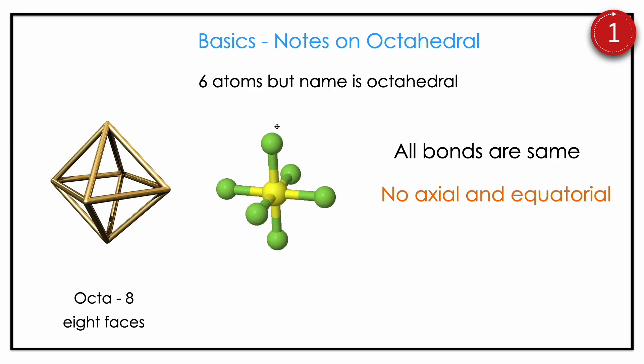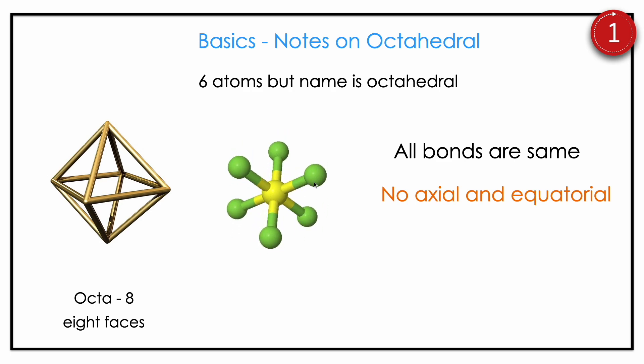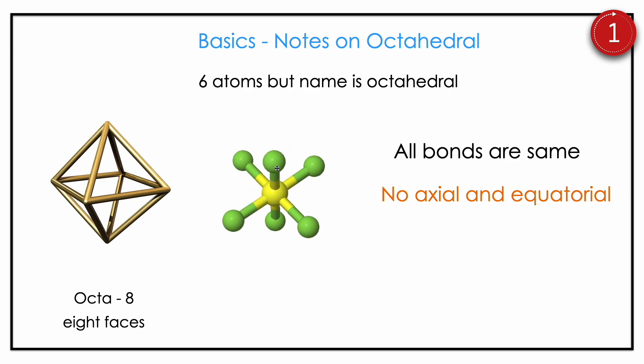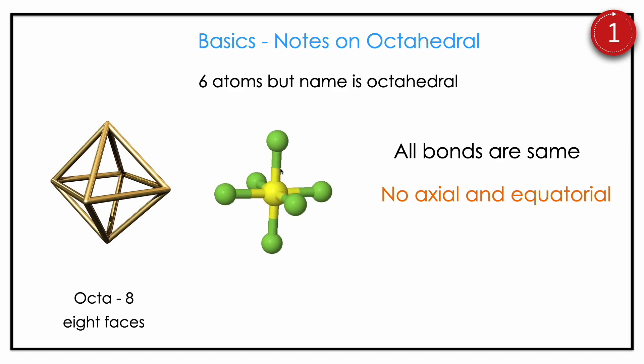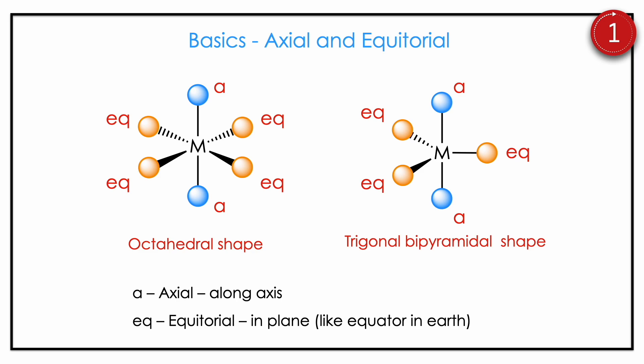Some small notes on octahedral: the name 'octahedral' comes from eight faces, but it has six atoms — so don't confuse 'octa' with the atom count. Another fact is that in octahedral, there is no distinction between axial and equatorial because all atoms are the same — if you rotate, axial becomes equatorial and equatorial becomes axial. This is because all are at 90 degrees — highly symmetrical. The atoms on the plane are equatorial; atoms on the axis are called axial. This concept will come in two types of shapes: octahedral and trigonal bipyramidal.